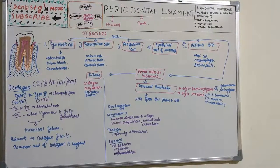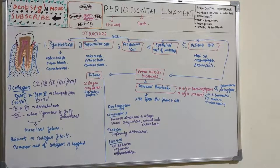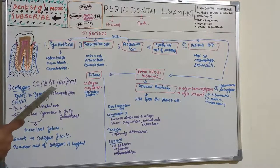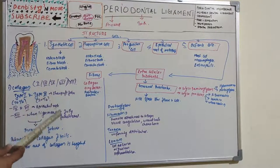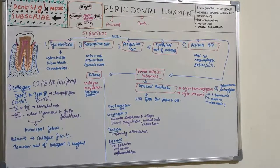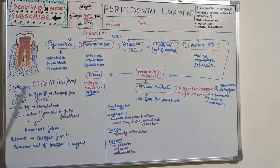Extracellular substances include fibers and ground substances. In fibers we have collagen, elastic, reticular, secondary fibers, oxytalan fibers, and the intermediate plexus. Collagen fibers are the main fibers — the basic types are type 1 and type 3. Type 1 accounts for 70% and is uniformly distributed in the ligament, whereas type 3 accounts for around 20% and is found in the periphery of Sharpey's fibers. Type 4 and type 7 are associated with epithelial cell rests and blood vessels. Collagen is gathered to form bundles approximately 5 micrometers in diameter, termed principal fibers.